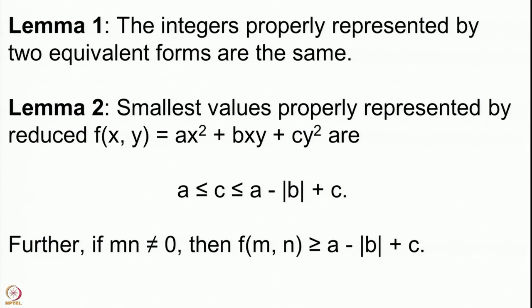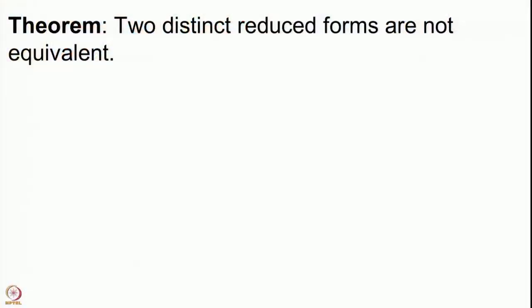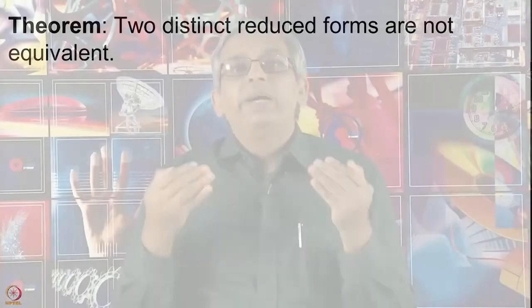These are the two lemmas we are armed with, and now we are going to prove the main theorem: that two distinct reduced forms are not equivalent. Our method of proof is that we will start with two reduced forms, assume that they are equivalent, and prove that they are one and the same. We will have to prove that their a's are the same, c's are the same, and b's are the same.